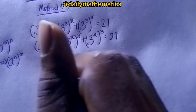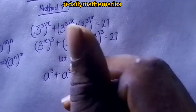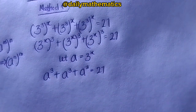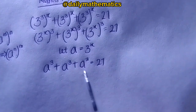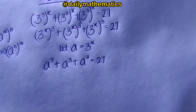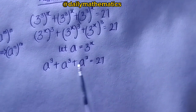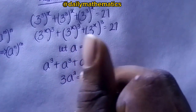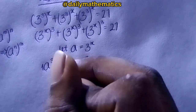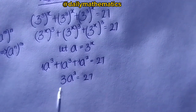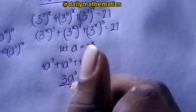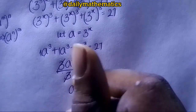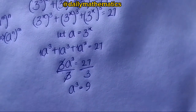Substituting, we get a³ + a³ + a³ equals 27. Adding like terms — there is an invisible coefficient of 1 on each — we get 3a³ equals 27. Dividing both sides by 3, we get a³ equals 9.